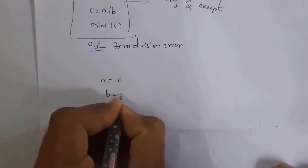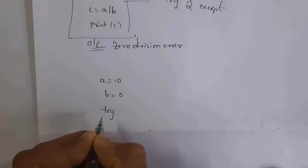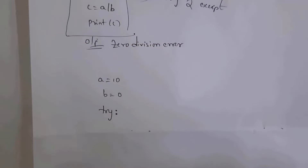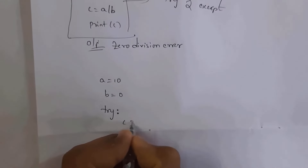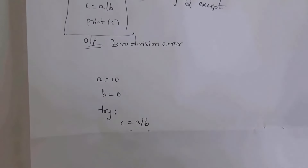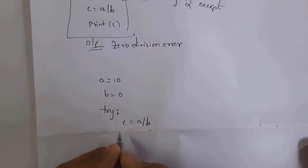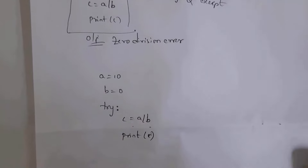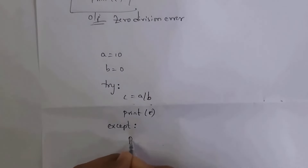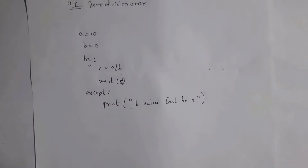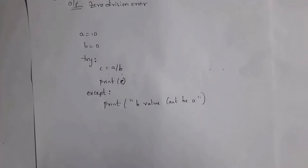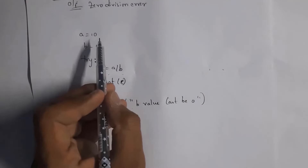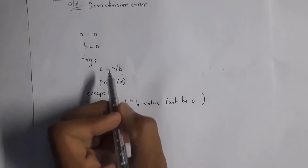Let's handle this exception using a try and except block. I write a = 10 and b = 0. As we know, we cannot divide any number by 0. Inside the try block I write the risky code: c = a / b, and then print(c). Next I take the except block — inside the except block I write a statement: print('b value can\'t be 0'). If an exception does not occur, whatever code is in the try block will be executed. But whenever an exception occurs, the try block is skipped and the except block is executed.